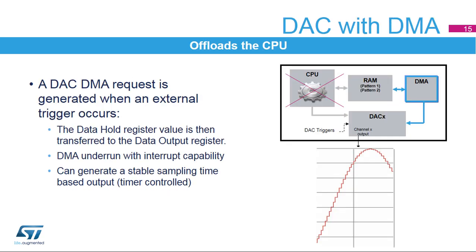The DAC can also create DMA requests from the trigger signal. Once a trigger is detected, the data hold register value is transferred to the data output register, and then a DMA request is generated to obtain new data for the data hold register. Because the update of the output data register is initiated directly by the trigger signal, the DAC output will not have jitter, enabling a stable sampling time signal output and making it easy to filter out the sampling frequency.